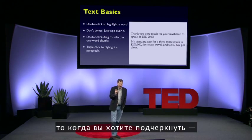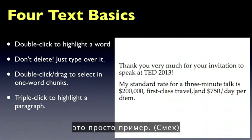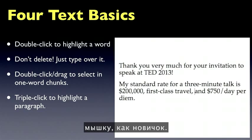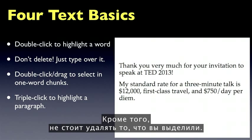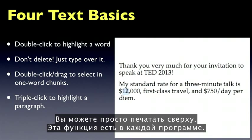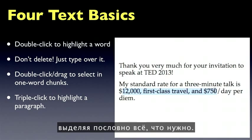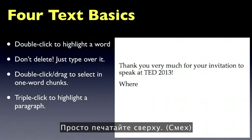When you want to highlight a word, please don't waste your life dragging across it with the mouse. Double-click the word — it neatly selects just that word. Also, don't delete what you've highlighted; you can just type over it. This works in every program. You can also double-click and then drag to highlight in one-word increments as you drag — much more precise. Again, don't bother deleting; just type over it.